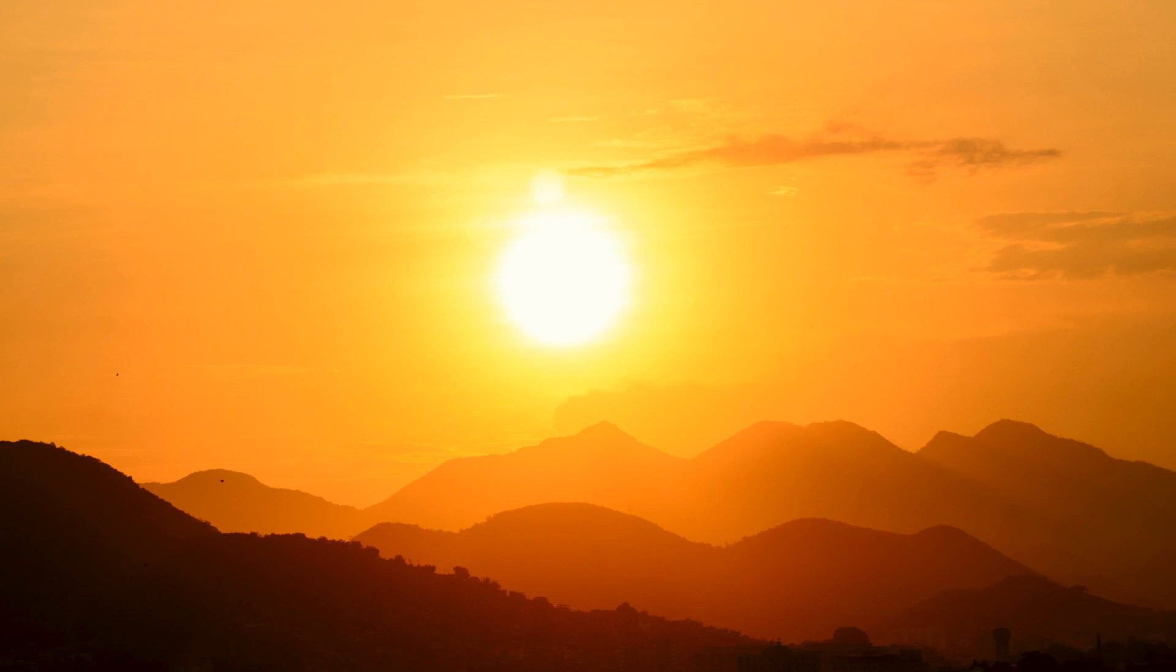The sunrise and sunset sun appears to us red because then the sunlight has to travel a thicker layer of the atmosphere and everything, every color of the spectrum, gets scattered except the red one.